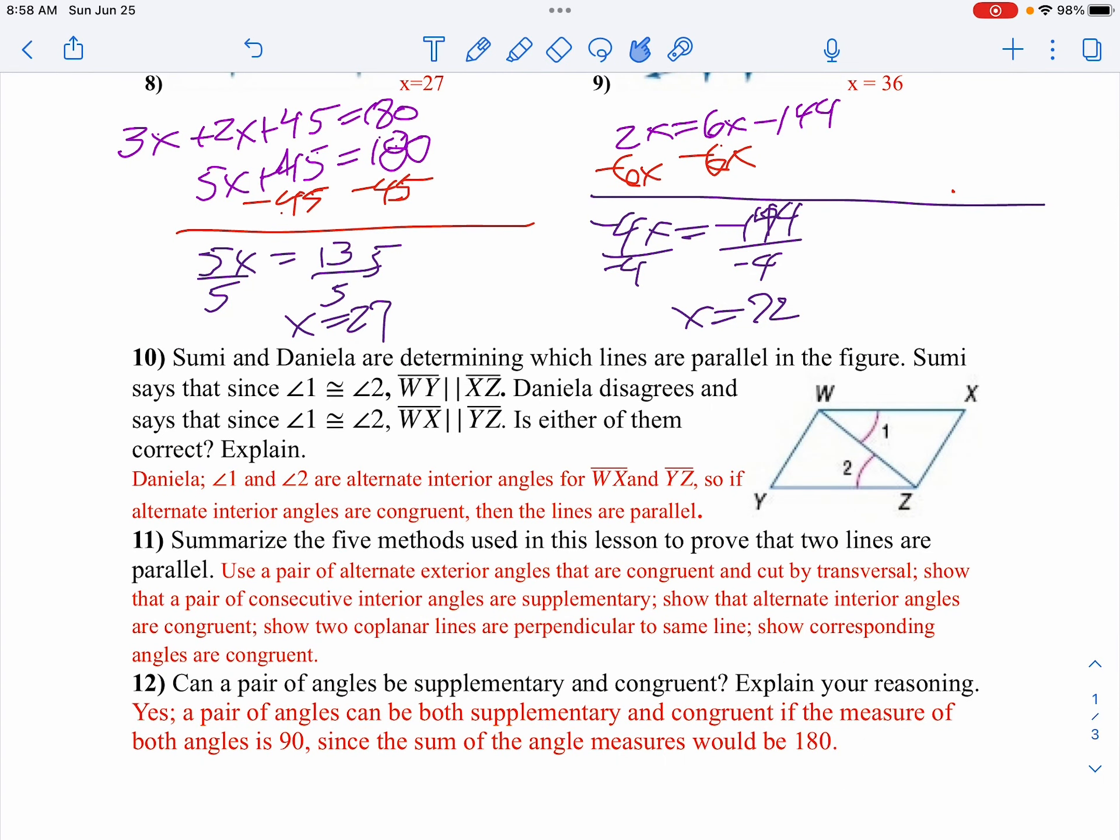On number 10, we have two people, Sumi and Daniella, and they're trying to figure out which lines are parallel. And Sumi says that since angle 1 is congruent to angle 2, that makes W-Y. Notice angle 1 does not touch W-Y. So Sumi is not correct.